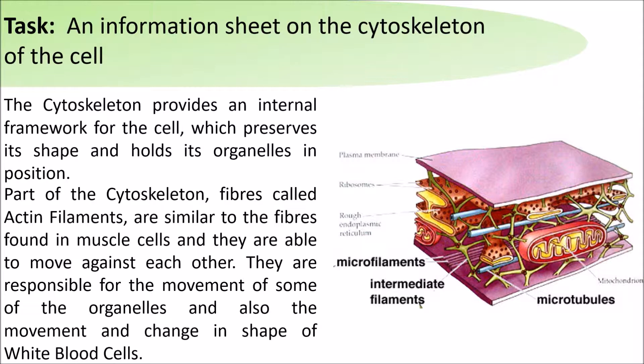Part of the cytoskeleton fibrils called actin filaments are similar to the fibres found in muscle cells and they are able to move against each other. They are responsible for the movement of some of the organelles and also the movement and change in shape of white blood cells.